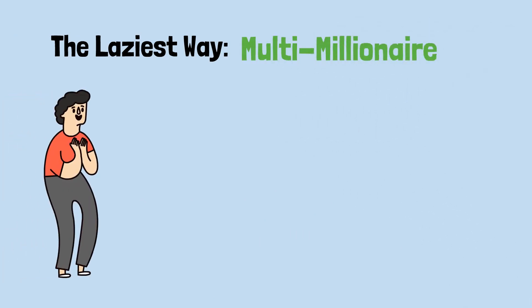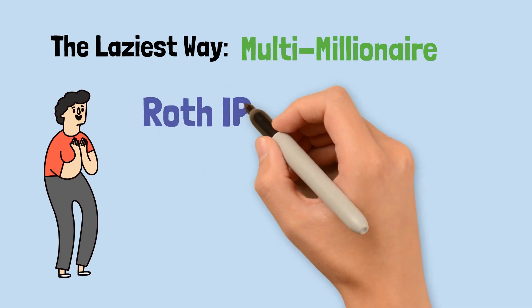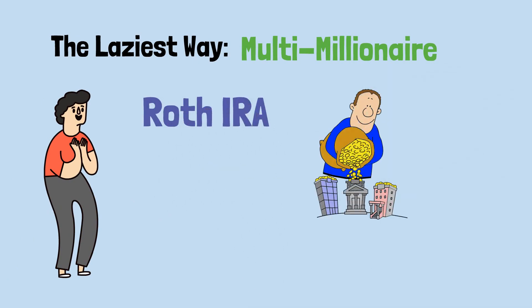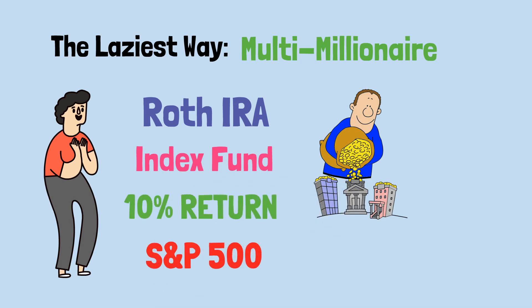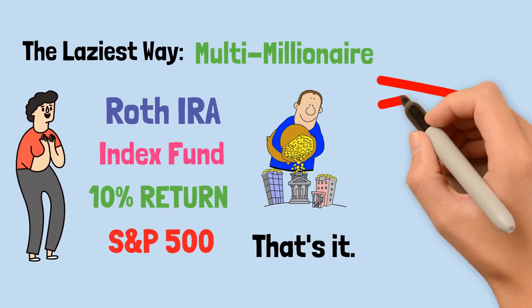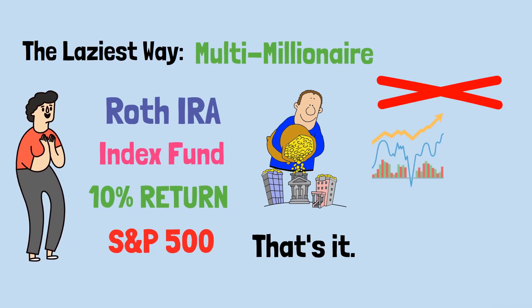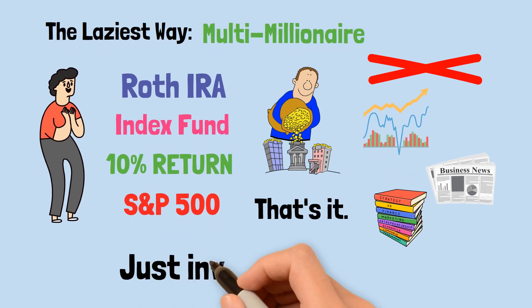Now, let's talk about the laziest way for Liam to become a multi-millionaire. All Liam needs to do is open up a Roth IRA and start investing in an index fund that averages a 10% return per year, such as the S&P 500. That's it. No need to obsess over the stock market, read financial news, or try to outsmart the experts. Just invest and forget.